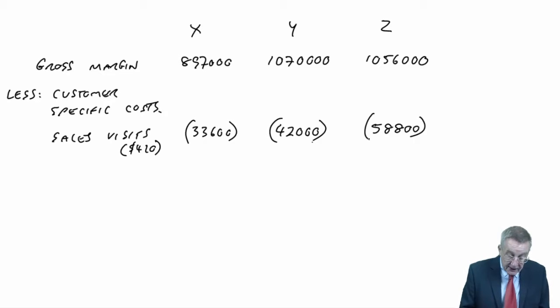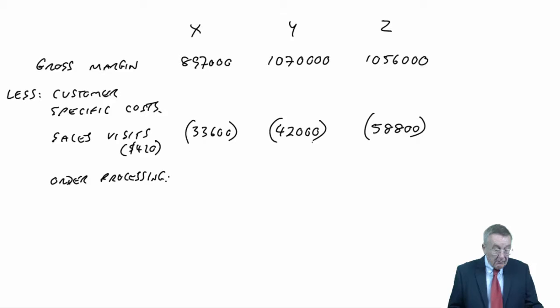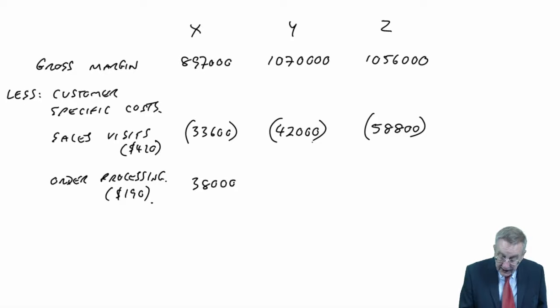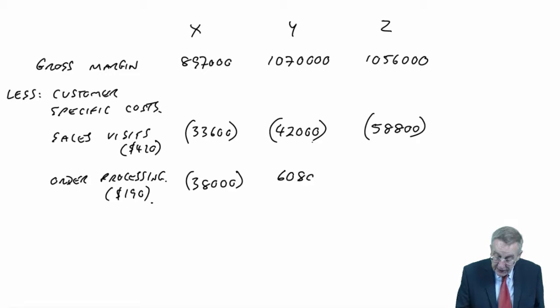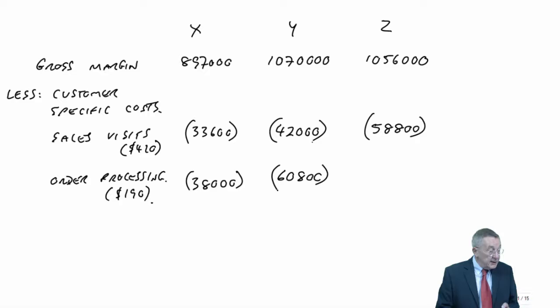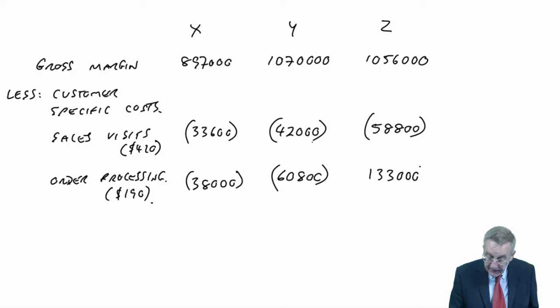What about order processing? Every order processed, we're charging at 190. How many orders are there? X has 200, so 200 at 190 is 38,000 that we charge against X. To Y, 320 orders at 190 is 60,800. And to Z, 700 orders at 190 each time is 133,000. I think you can see what's happening.